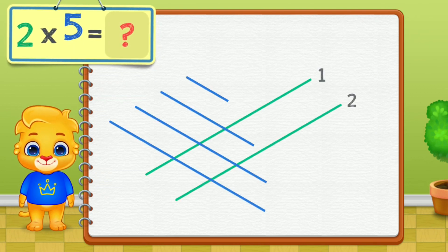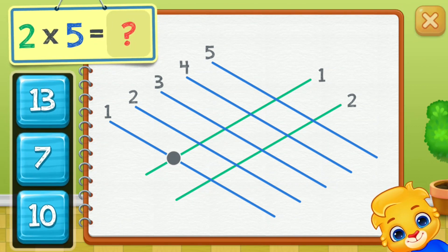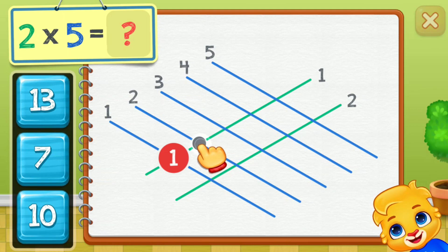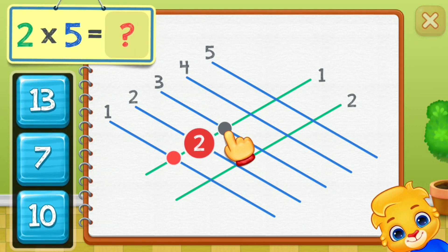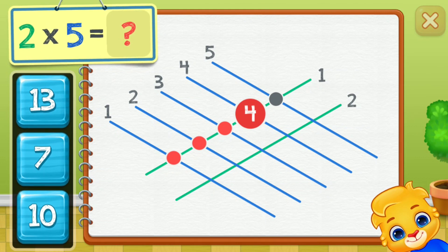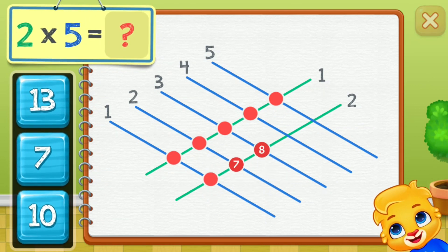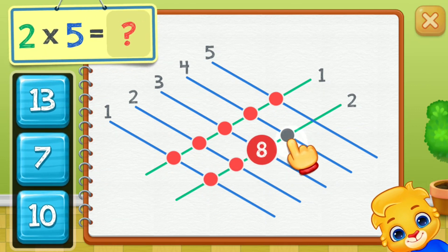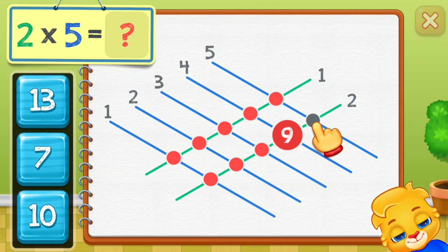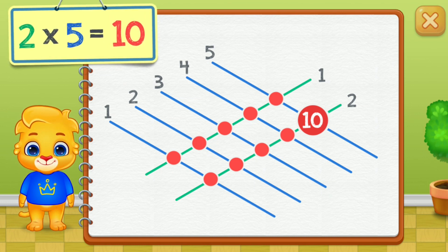Two times five equals... Touch intersection points! One, two, three, four, five, six, seven, eight, nine, ten. Two times five equals ten.